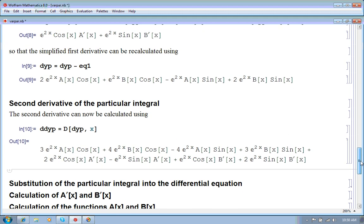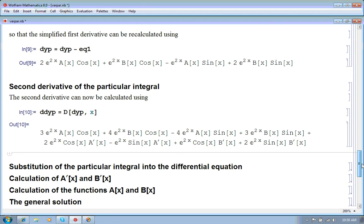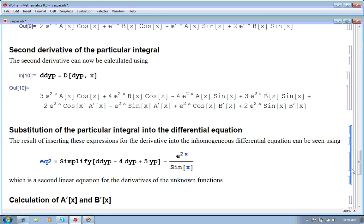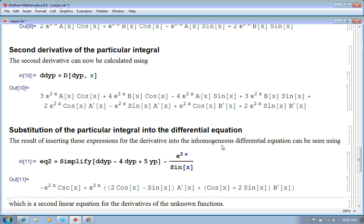So, now we're going to, having calculated the derivatives of our particular integral, we're now going to put those into the differential equation. So, we put those in. We take the second derivative, subtract off four times the first derivative of the particular integral and five times the particular integral and subtract off the inhomogeneous term. To get a second equation, which we can see involves the derivatives A prime of x and B prime of x of the unknown function.